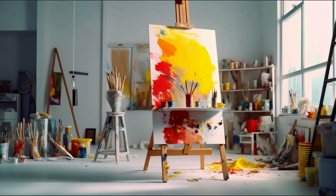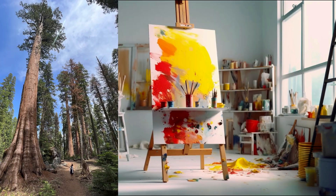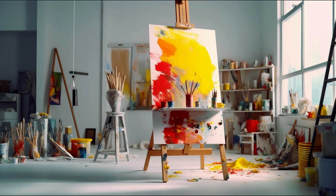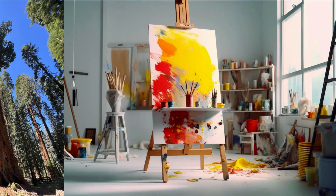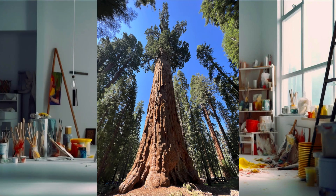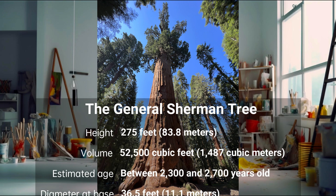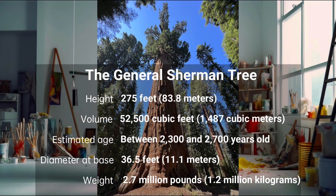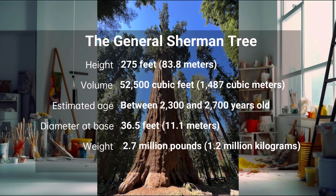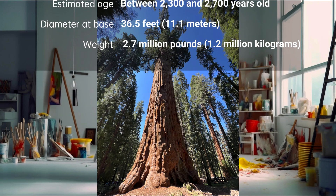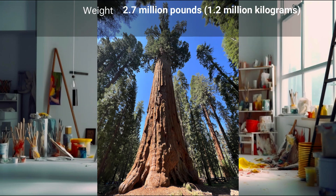Sequoia trees are some of the largest and longest living organisms on earth. The General Sherman tree in Sequoia National Park is the world's largest tree by volume. It's about 275 feet tall and has been growing for over 2000 years.